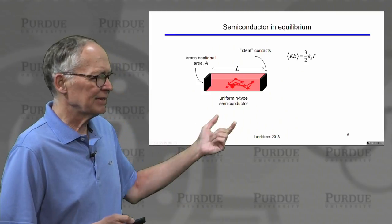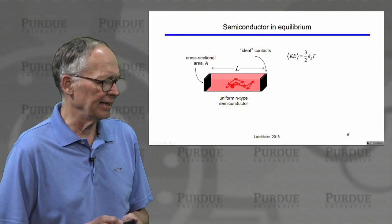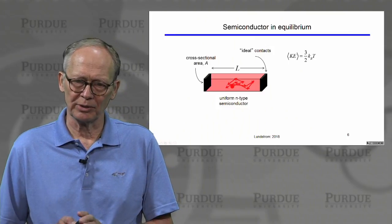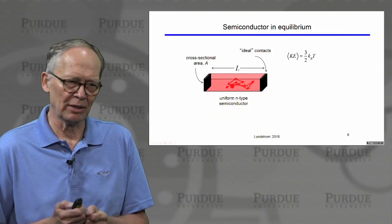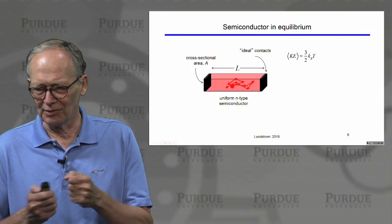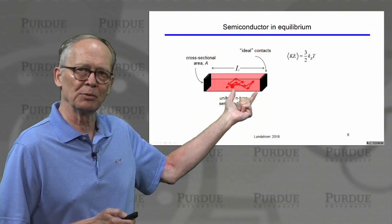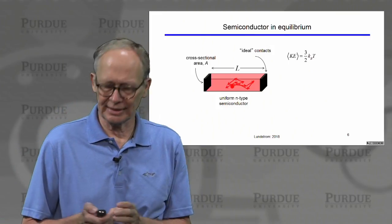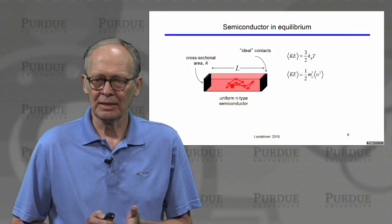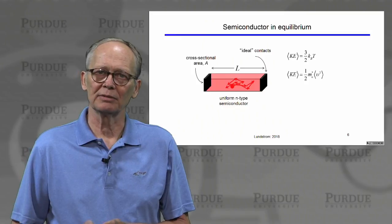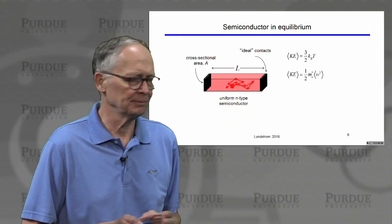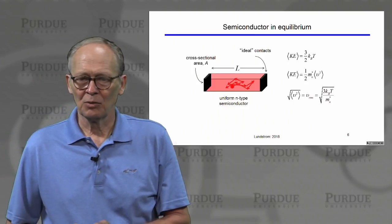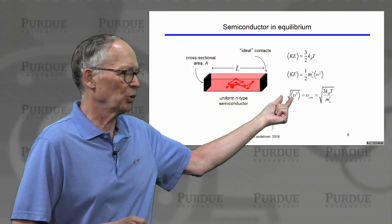Think about the drift component. Here I have a semiconducting slab with some cross-sectional area A and some electrons in it. If no voltage is applied, the slab is in equilibrium, but thermal energy rattles the atoms around, which interact with the electrons, knocking them around. So these electrons are in random, thermal, chaotic motion. Their overall average velocity is zero, but they have kinetic energy. The average kinetic energy is 3/2 kT. Since kT = 1/2 mv², we can figure out how fast these electrons are moving. Solving for the root-mean-square velocity gives the thermal velocity: sqrt(3kT/m*).